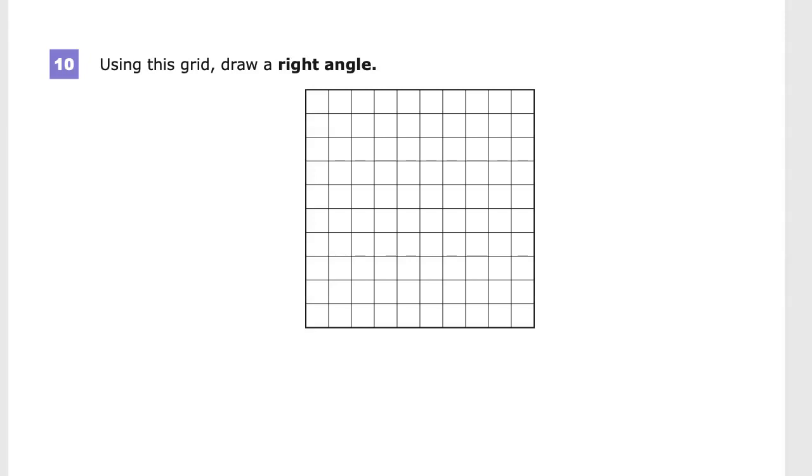Now we need to know what a right angle is, and a right angle has a very specific definition. It's an angle that is 90 degrees.